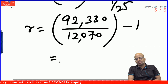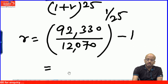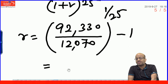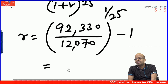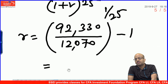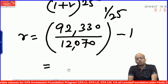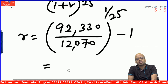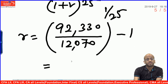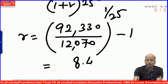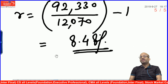To compute r: 92,330 divided by 12,070, then take the square root 12 times, minus 1, divide by 25, plus 1, then N2 equal to 12 times — whatever you get, minus 1, multiply by 100. The answer is 8.48% post-tax YTM.